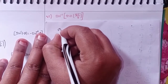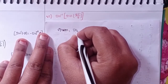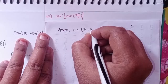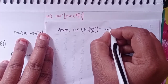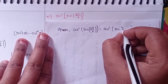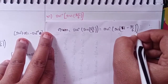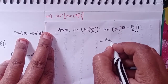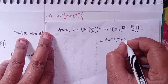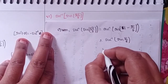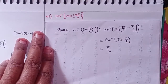Sixth one: given sin inverse of sin(5π/6). Can I write 5π/6 as pi minus π/6? Sin inverse of sin(5π/6) means the answer is π/6. Sin inverse of sin theta equals theta, that means π/6.